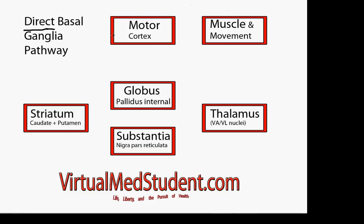The basal ganglia consists of the striatum, which is composed of the caudate and the putamen; the globus pallidus, both the internal and external segments — the internal segment is the only one shown in this schematic; the substantia nigra; as well as the subthalamic nucleus, which is not shown in the schematic either.